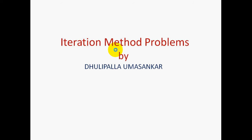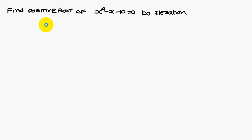Today, we are going to discuss iteration method problems. Find a positive root of x power 4 minus x minus 10 is equal to 0 by iteration method.